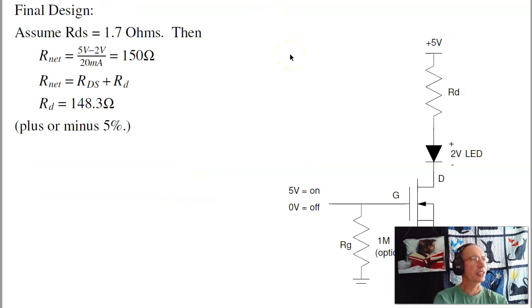Now I can analyze the circuit. When this is 1.7 ohms turned on, I want the total to be 150 ohms. So R sub D should be 148.3 ohms. Give or take 5% because we have 5% resistors in lab.